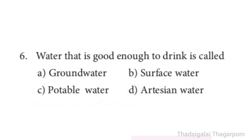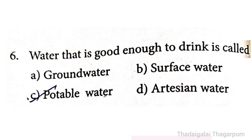6th one: Water that is good enough to drink is called — Ground water, Surface water, Potable water, or Artesian water. The correct answer is C option: Potable water. Water that is good enough to drink is called Potable water.